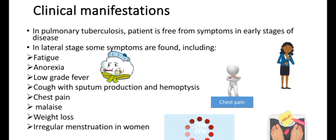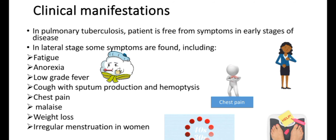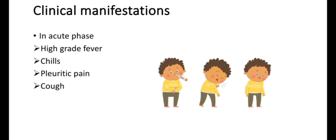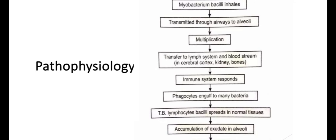In the latent phase, additional symptoms include chest pain, malaise, weight loss, and irregular menstruation in women. Then comes the third stage — the acute or active phase — in which the patient experiences high-grade fever, chills, pleuritic pain, and cough.